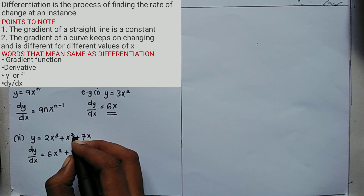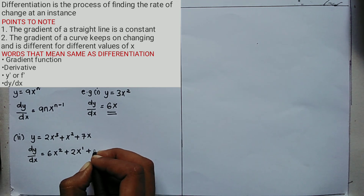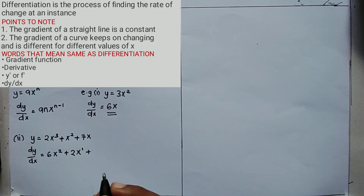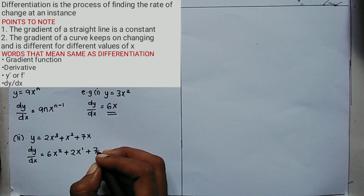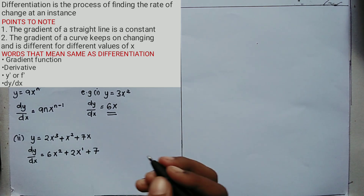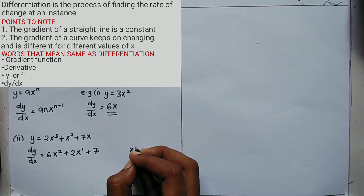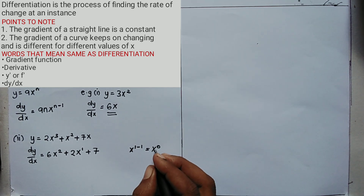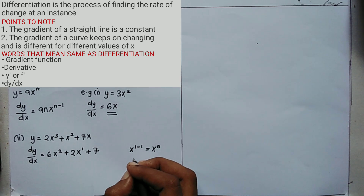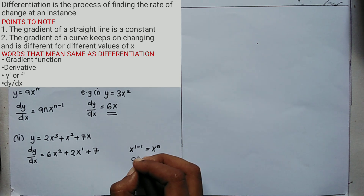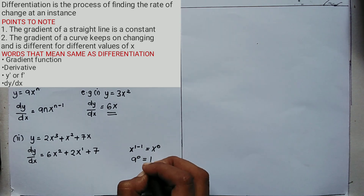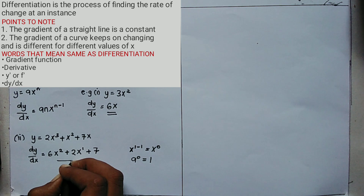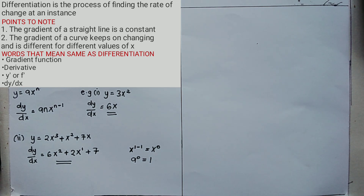For the third term, 7x: the coefficient is 7 and the power of x is 1, so 7 times 1 is 7. The power becomes 1 minus 1 = 0, giving x to the power 0. From Form 2, any number to the power 0 equals 1, so x⁰ = 1, and 7 times 1 is just 7. Therefore dy/dx = 6x² + 2x + 7.